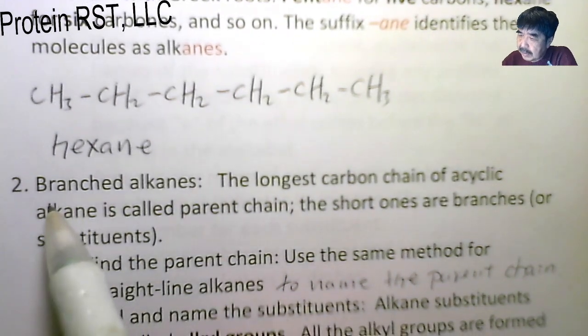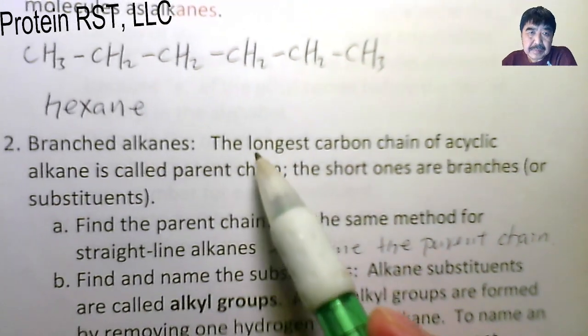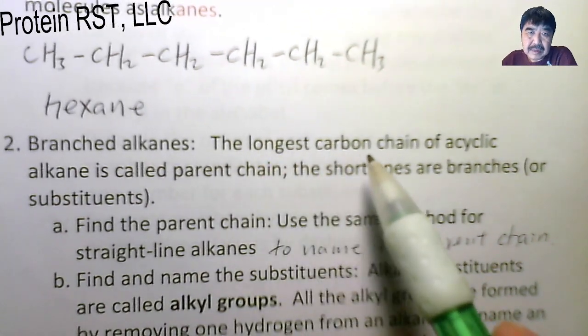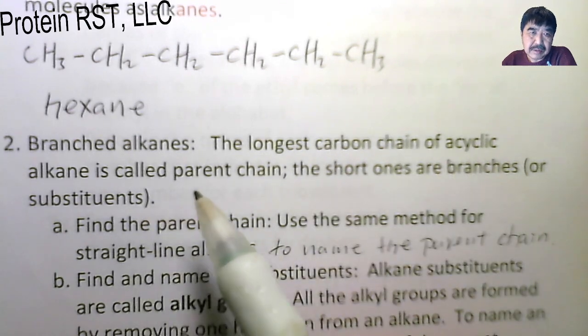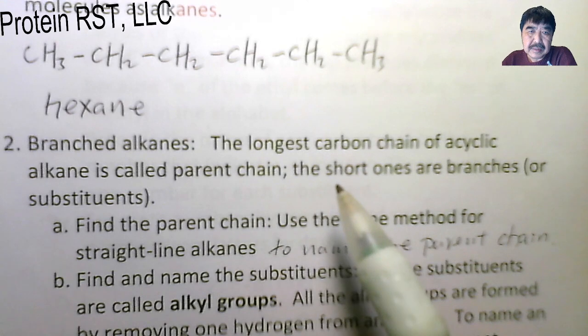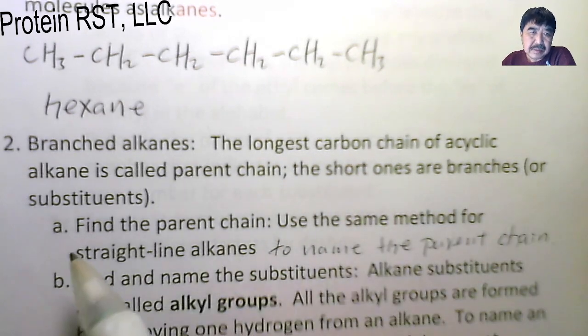Second, the branched alkanes. The longest carbon chain of acyclic alkane is called a parent chain. The short ones are branches or substituents.